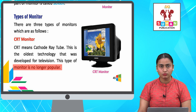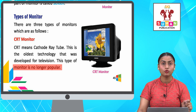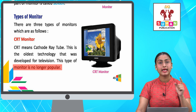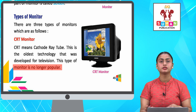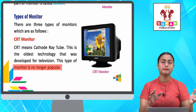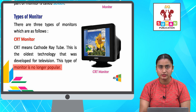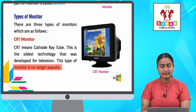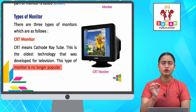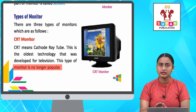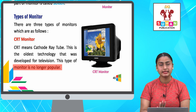Sabse pehla type ka monitor hai CRT, yaani Cathode Ray Tube. Jo pehle ke zamaane ke televisions hote the, jinke piche ek bhoat bada bulge bhi hota tha, unhi patterns ko use karte hue yeh monitors banaye gaye the. Yeh oldest technology hai; aaj kal zahaadatar kahi par bhi dikhai nahi dete.